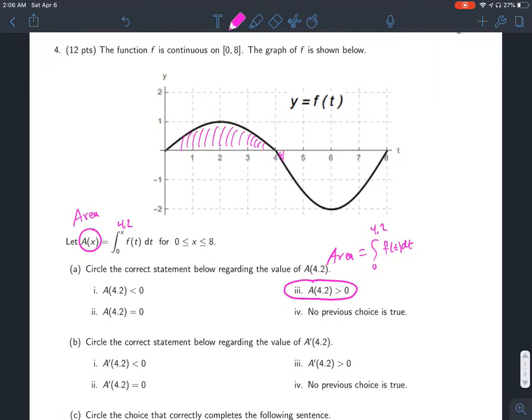Question b: Circle the correct statement below regarding the value of A prime. Well, the second fundamental theorem of calculus says that A prime of x is just going to equal f of x times the derivative of x. You put this x in for t, and then take the derivative of x, which of course is going to be 1 in this case. So A prime of x is just f of x.